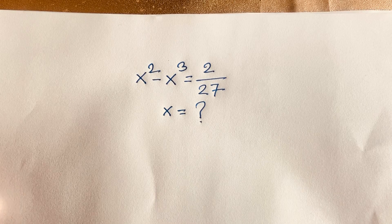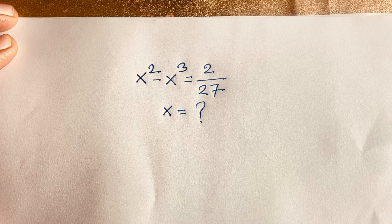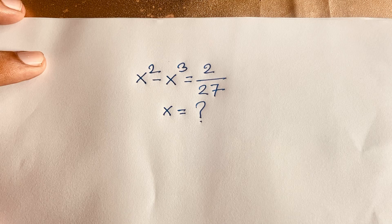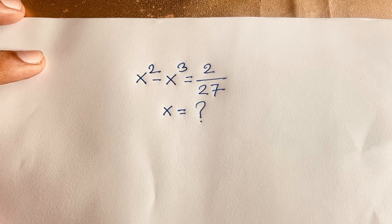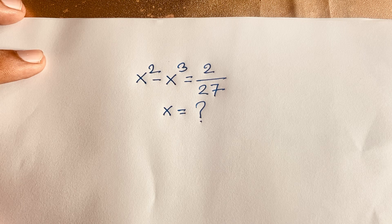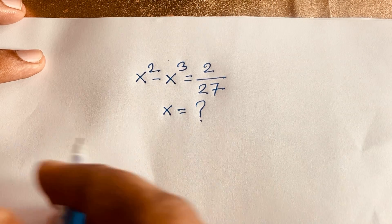Hello everyone. In this video we'll solve this interesting exponential equation: x raised to the power (x squared minus x cubed) is equal to 2 over 27. What is x? Let's start.